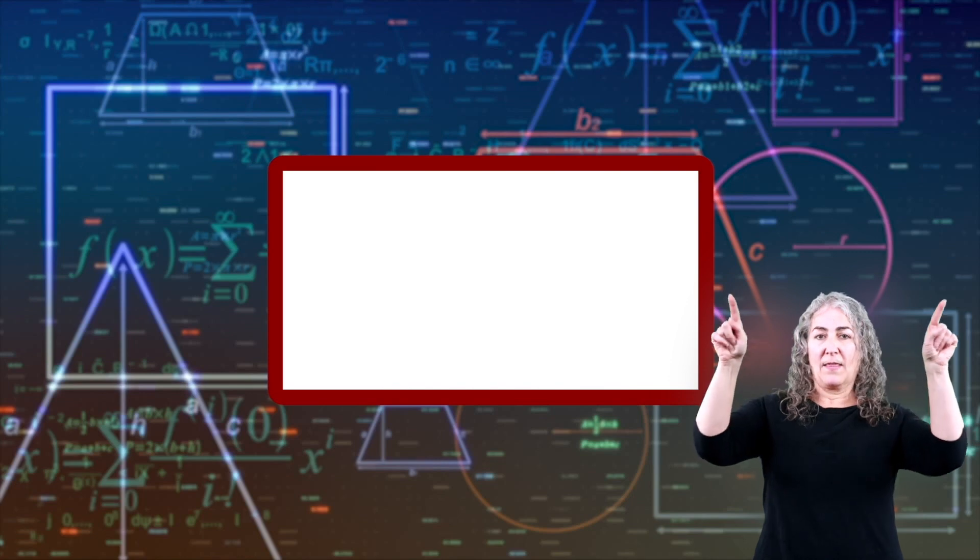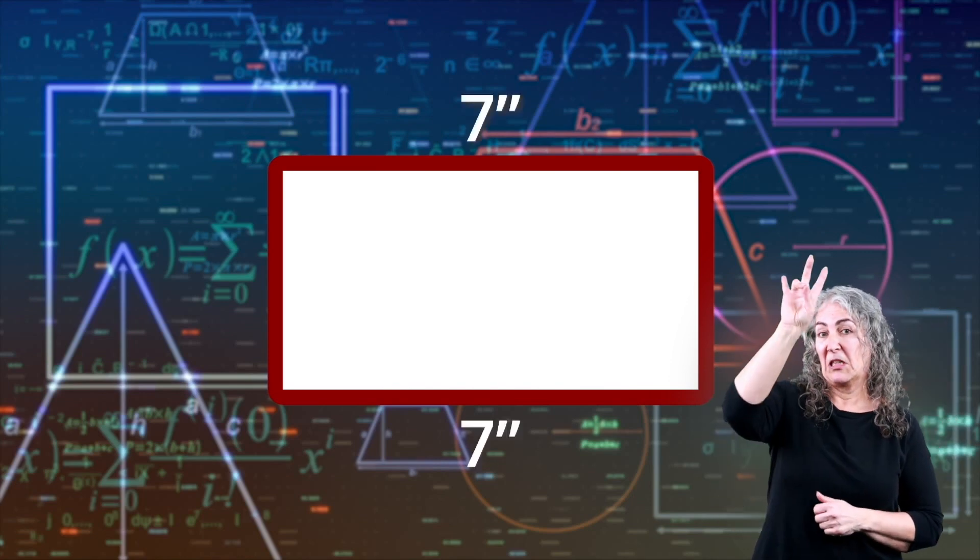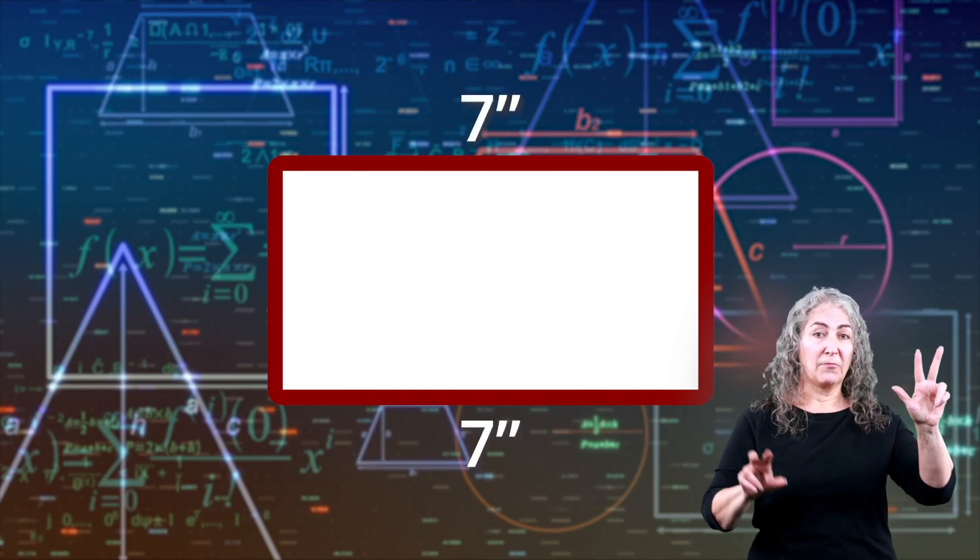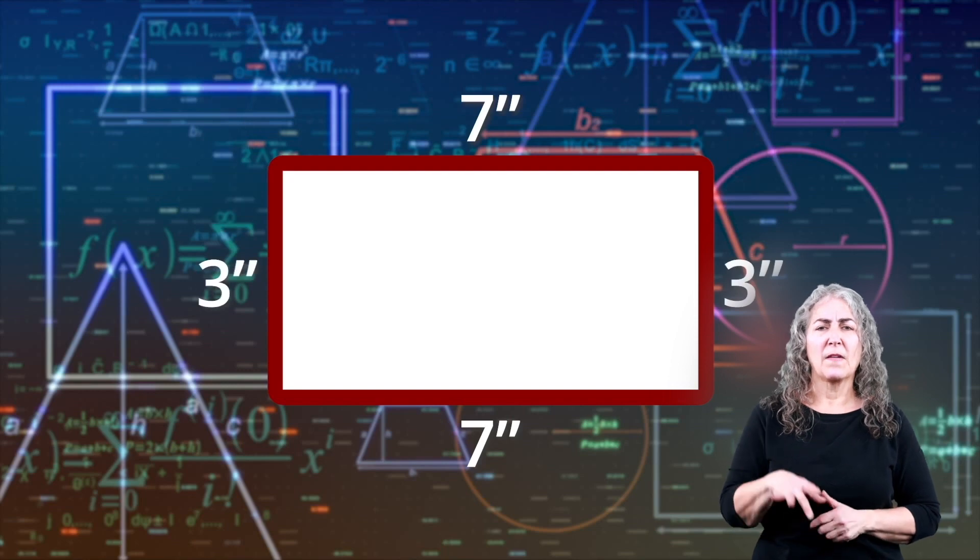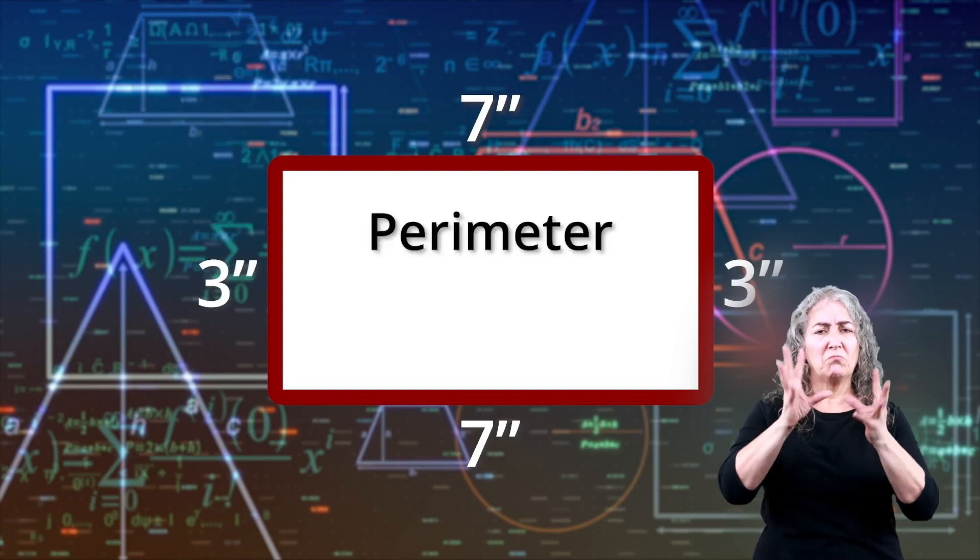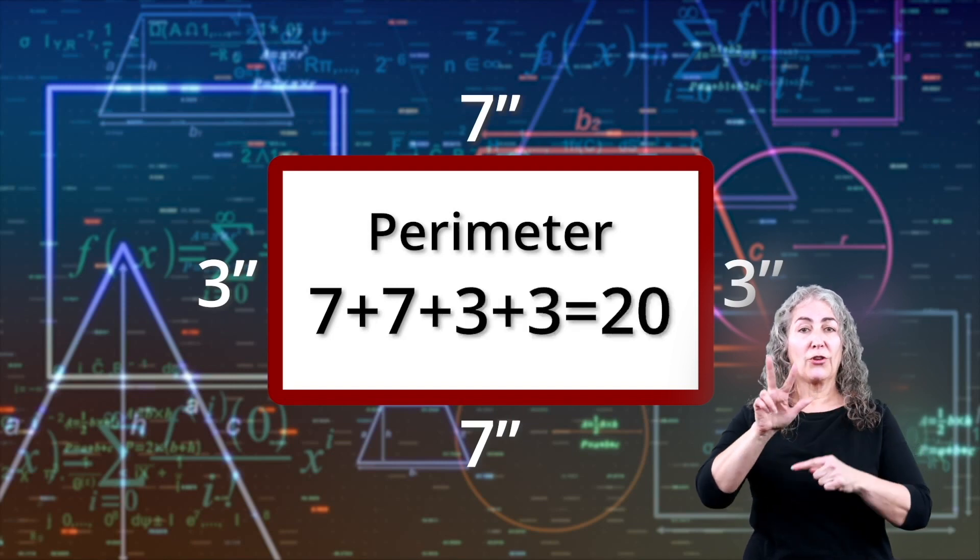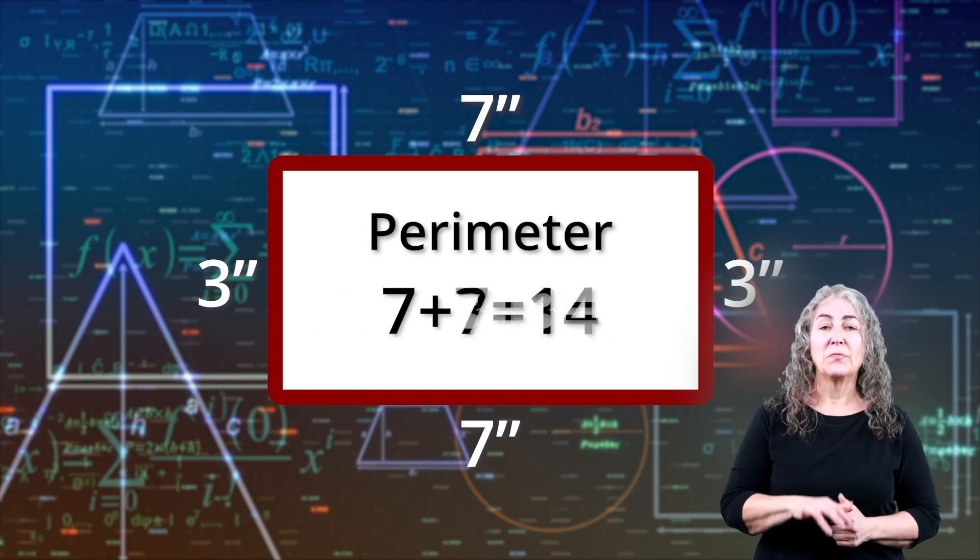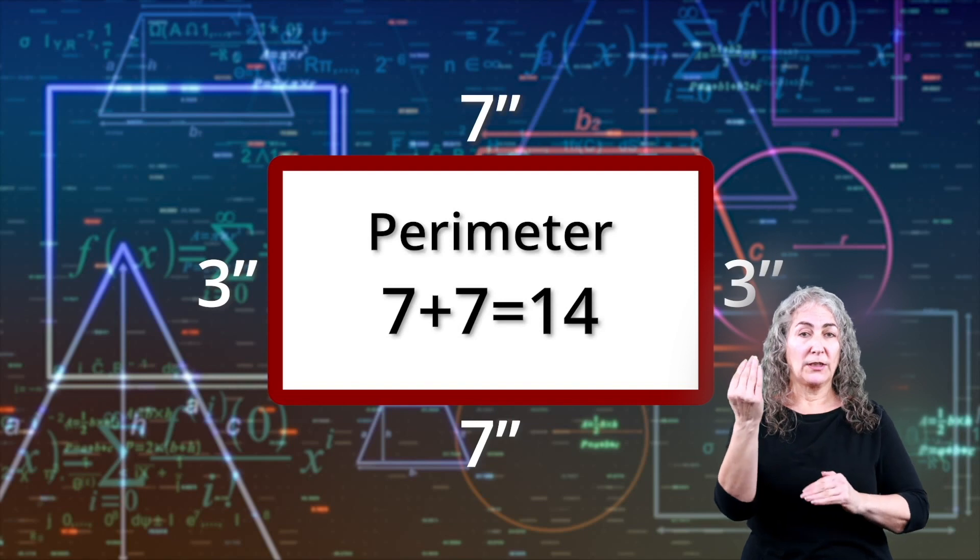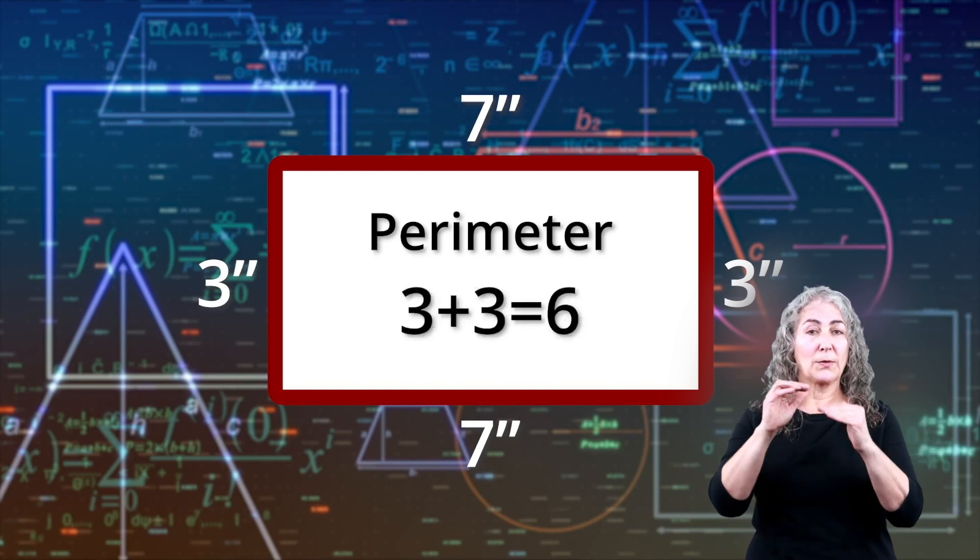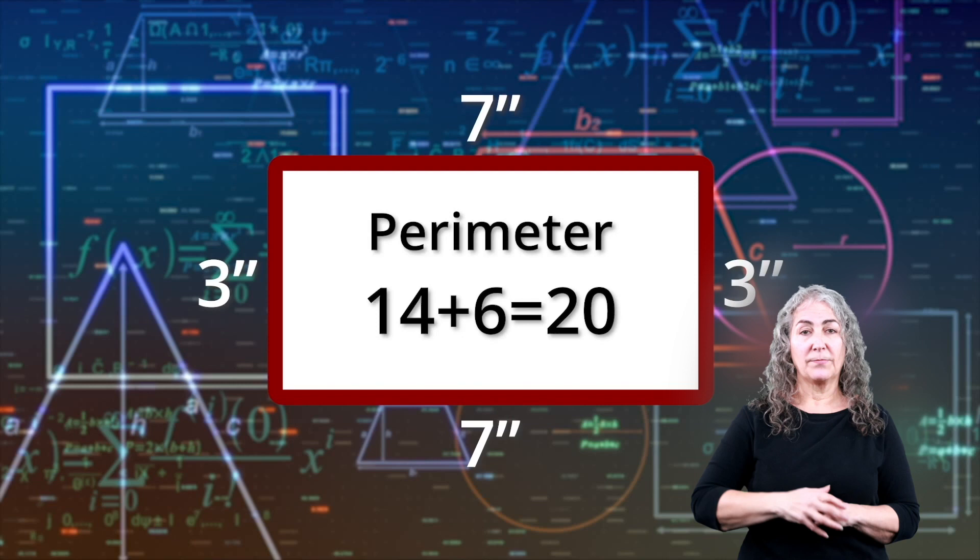Let's assume the length of both sides of this rectangle is 7 inches, and the width of both sides is 3 inches. To find the perimeter, we add up the two sides of 7 inches and the two sides of 3 inches, which would equal 20 inches. 7 plus 7 equals 14, 3 plus 3 equals 6, 14 plus 6 equals 20.